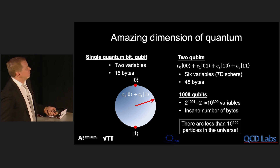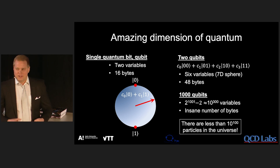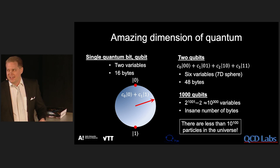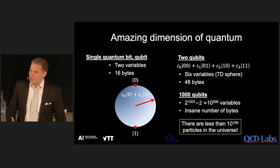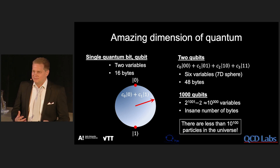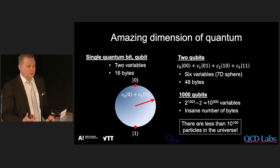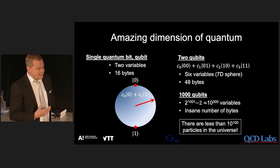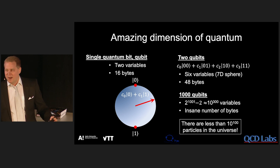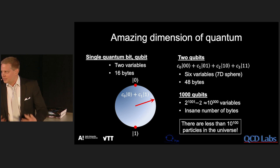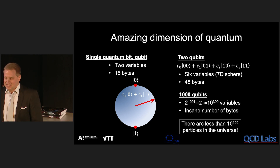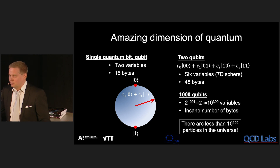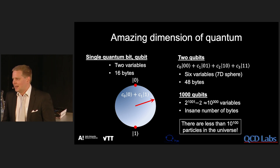What about two qubits? It turns out to have six variables — a seven-dimensional sphere. You can represent it as the sum of all classical states, where the coefficients are what you need to know to actually know the quantum state. Here you would need 48 bytes — still easy for a classical computer. But what about 1000 qubits? You have an insane number of degrees of freedom, an insane number of bytes. You can never store such a state in classical computer memory, because there are fewer particles in the universe than the bytes you would need. This really shows, in principle, that quantum computers can do something classical computers can never do.